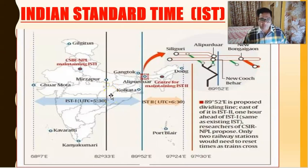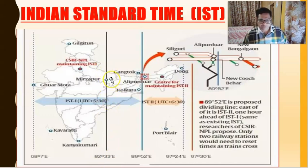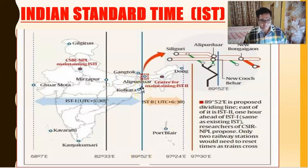The Indian Standard Time, also known as IST, has been decided according to 82 degrees 33 minutes East longitude, which passes through Mirzapur. Mirzapur is near Allahabad in Uttar Pradesh. There is also a second reference longitude near Kolkata at 89 degrees 52 minutes East, but only the one at Mirzapur — IST +5:30 — is considered for calculating time, to avoid confusion.